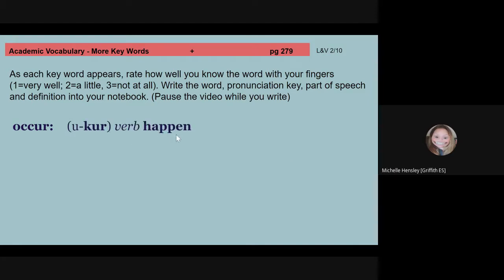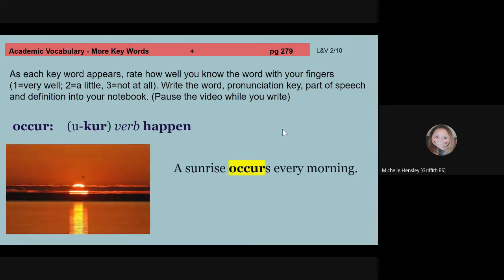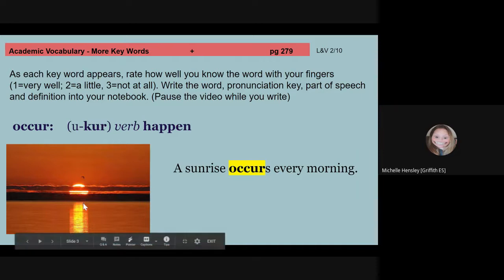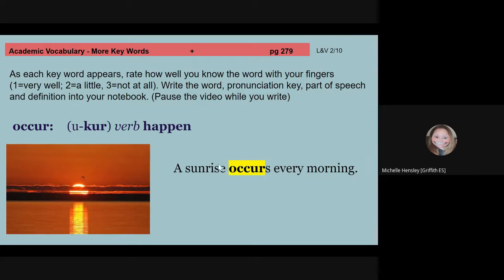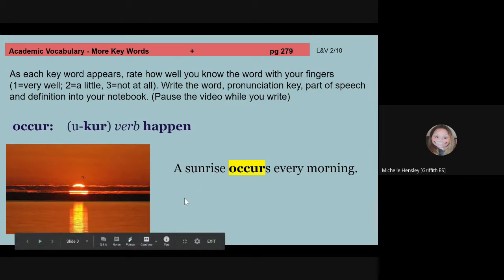Occur is a verb, and it means happen. If something occurs, it happens. It just means something happens. A sunrise occurs every morning. Occur. A sunrise happens every morning. Notice you can just place that definition right in the spot for it. A sunrise happens every morning. A sunrise occurs every morning. Just as a sunset occurs every evening. Rain rarely occurs in the desert. It doesn't happen very often. Occur. If you need more time with occur, please go ahead and pause your video now.